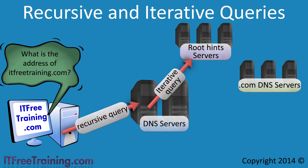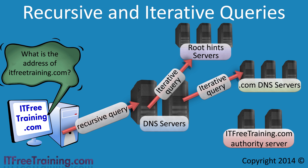Now that the DNS server has the addresses of the dot com servers, it will send a second iterative query to the dot com servers asking if they know how to resolve ITFreeTraining.com. These DNS servers will also not know how to resolve ITFreeTraining.com, however they will return the addresses of the authority DNS servers for ITFreeTraining.com. Using this information, the DNS server can send a third and final iterative query to the ITFreeTraining DNS server and obtain the IP address for ITFreeTraining.com.